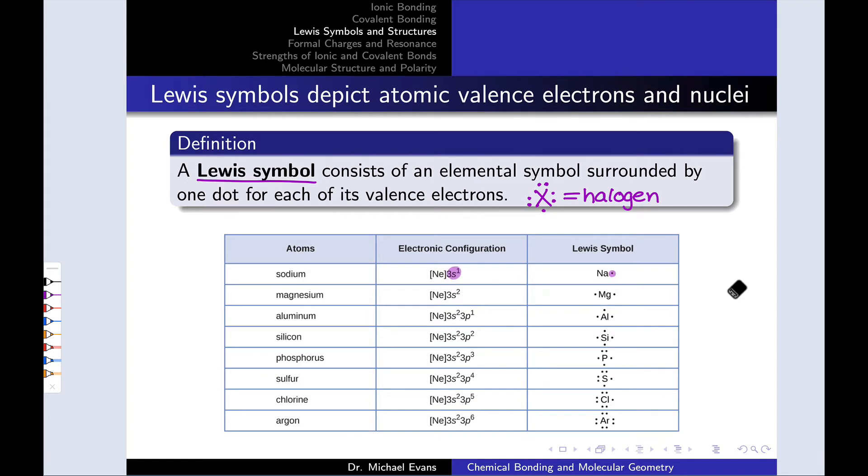Moving one step to the right with magnesium, magnesium has the configuration of neon with two electrons in the valence shell, 3s2, and there are two dots in the Lewis symbol. Aluminum has three valence electrons in the n equals 3 shell and three dots around it in the Lewis symbol. Silicon has four valence electrons around it, four valence electrons in the n equals 3 shell, and four electrons around it in the Lewis symbol, and so on and so forth from there.